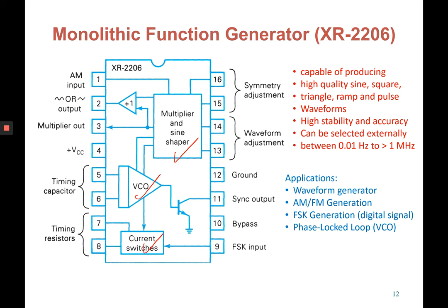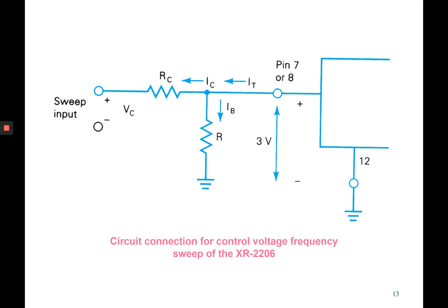The XR2206 can be selected externally between 0.01 Hz up to 1 MHz. It is widely used in waveform generators, AM or FM generation, FSK (Frequency Shift Keying) generation, and phase-locked loops. For the circuit connection of the XR2206, you need to refer to the data sheet of this IC in order to understand the connections and which pin you need to connect, to avoid damaging the IC.